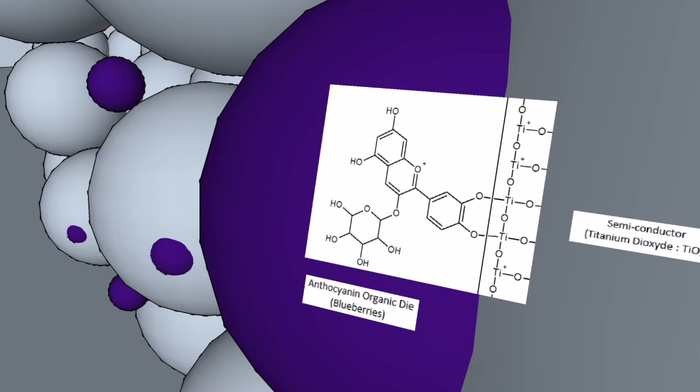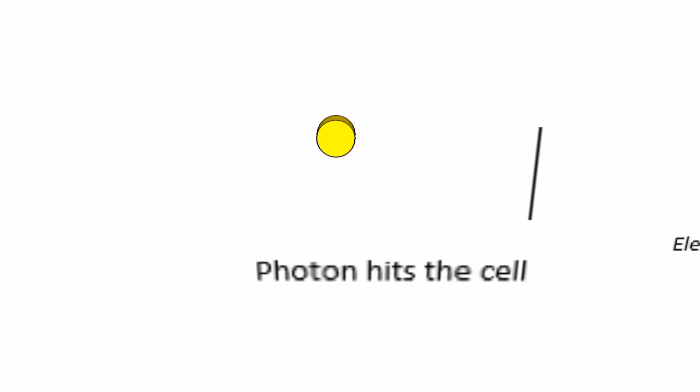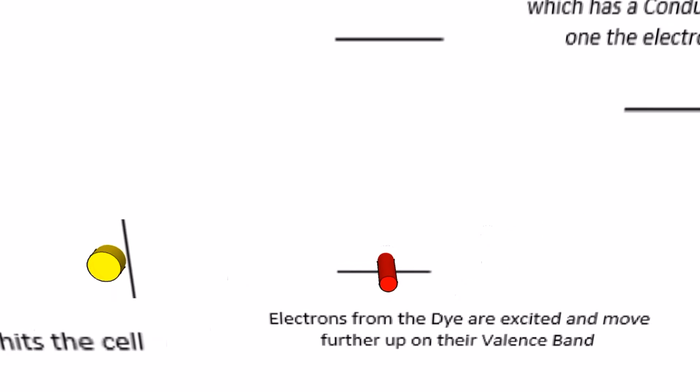Let's now see how a DSSC creates an electrical current. When a photon hits the DSSC it is absorbed by the dye. The consequence of this is that the electrons from the atoms in the dye are excited by the photon and move to a higher energy level.